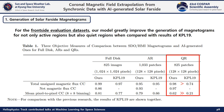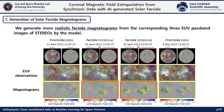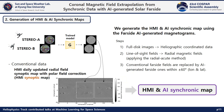In particular, mean pixel-to-pixel correlation coefficients of the quiet regions had greatly increased. We then generate more realistic far-side magnetograms from the corresponding three UV passband images of STEREO using the model. Our far-side magnetograms make it possible to monitor the continuous evolution of solar magnetic field distribution with realistic strengths over the solar surface.